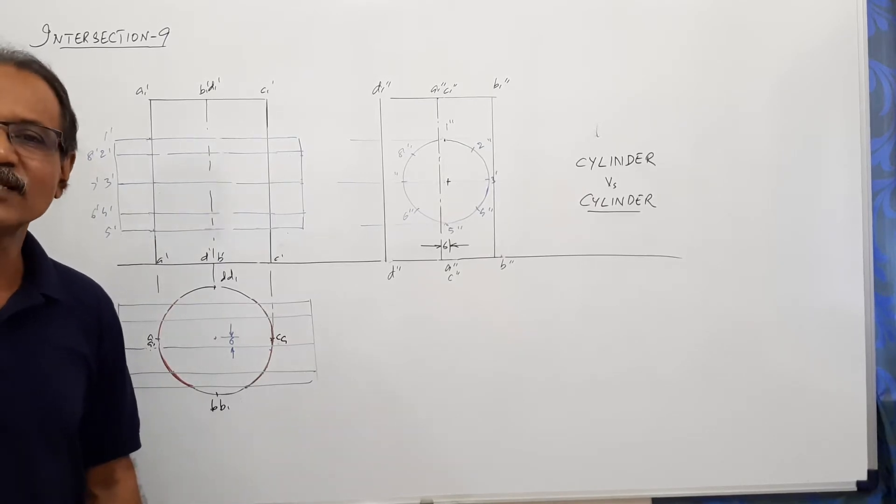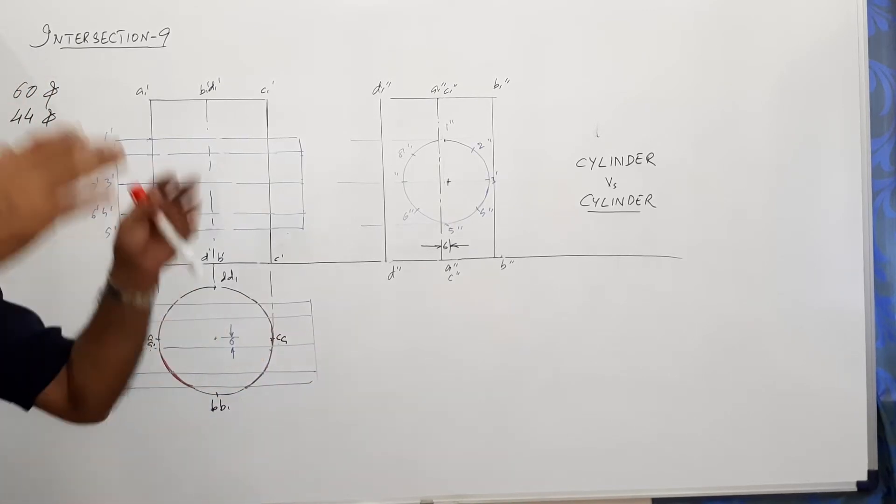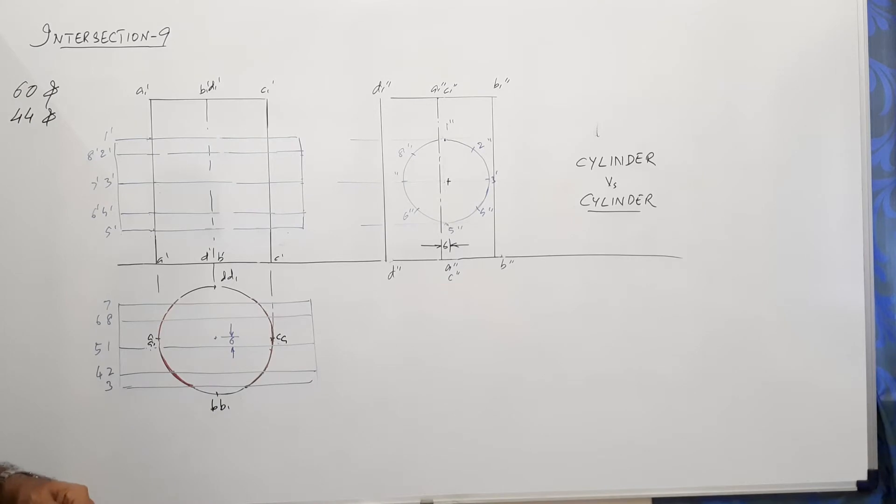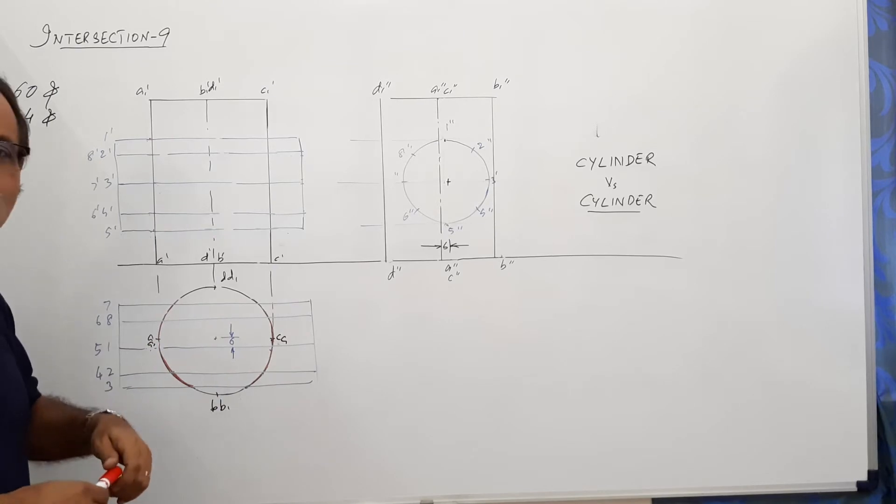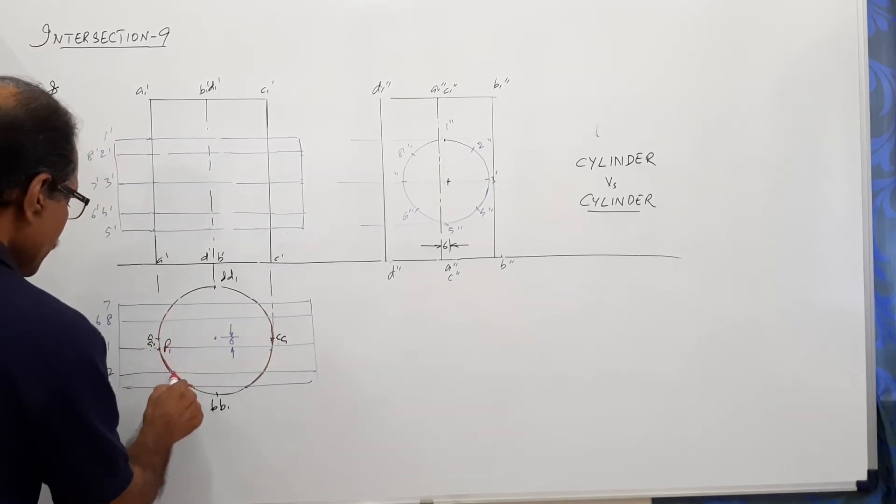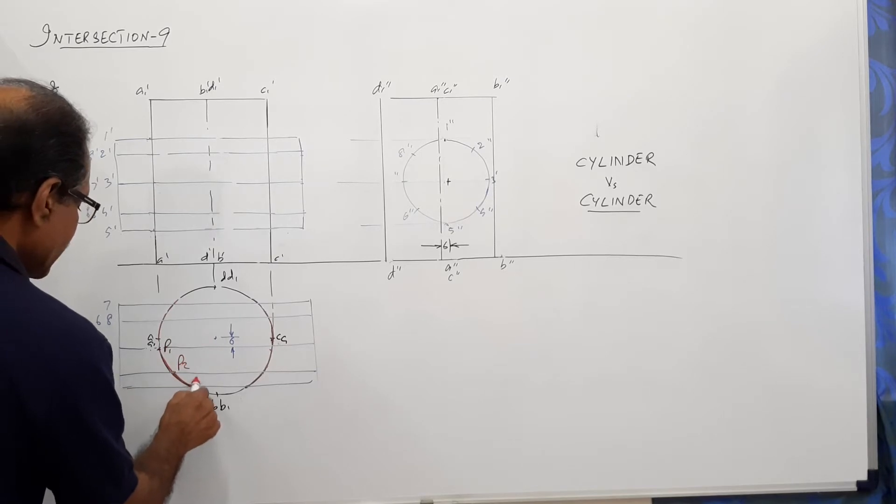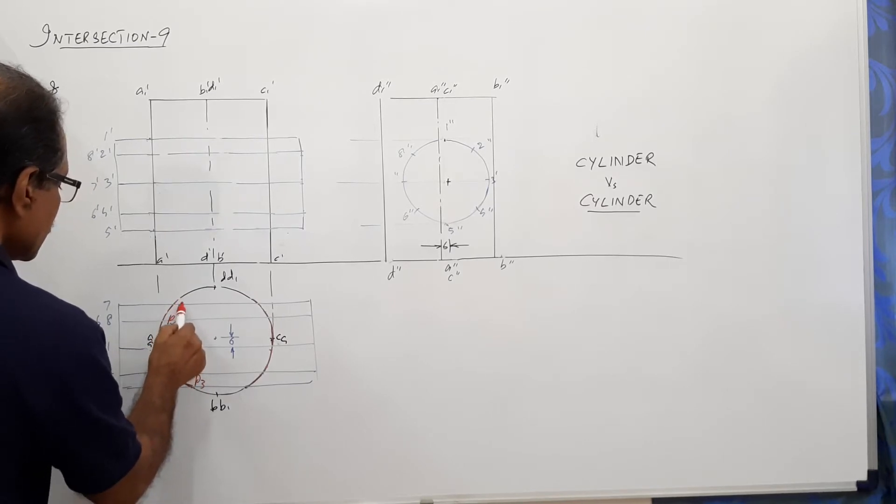Now, as usual, locate the points where the horizontal cylinder generators cut the vertical cylinder on one side as P1, P2, P3, etc. And on the other side as Q1 to Q8. This is P1, P2, P3, P2 itself is P4, P1 itself is P5, P6, P7, P8 on one side.